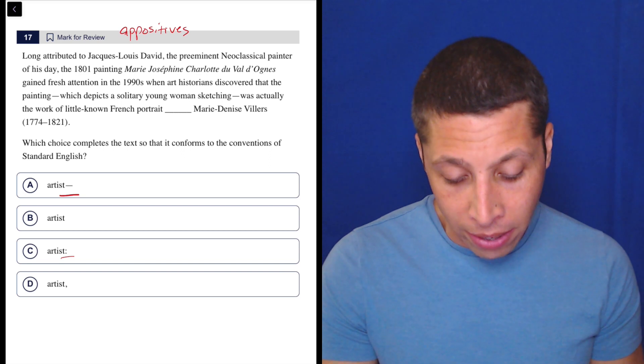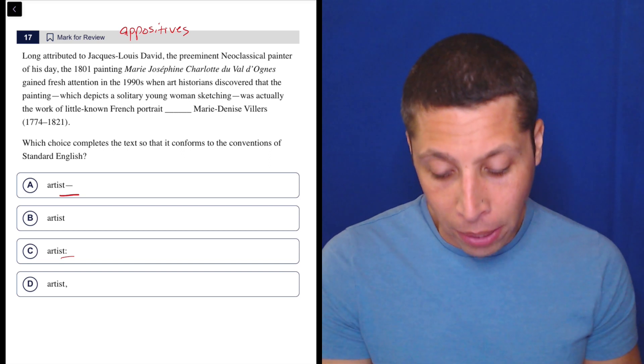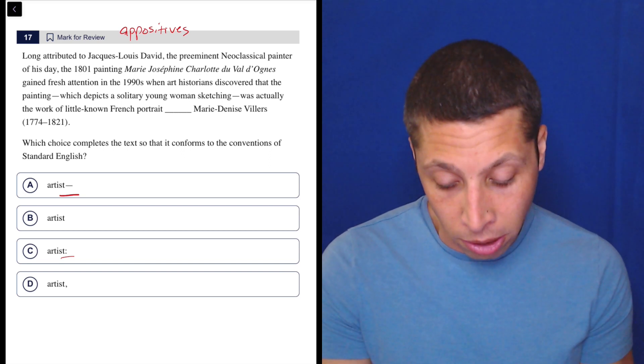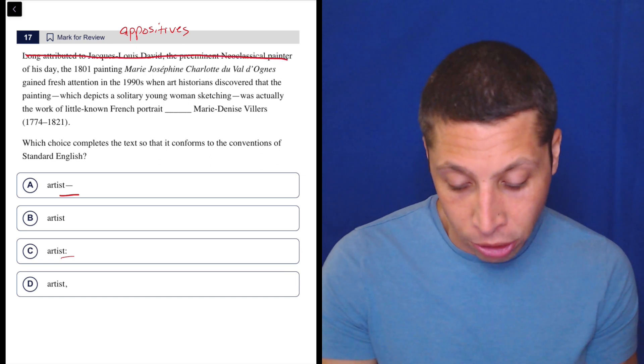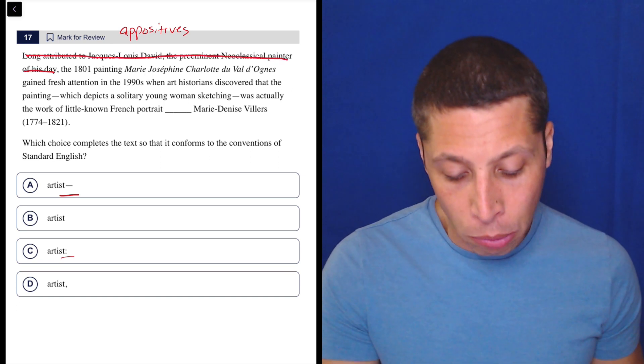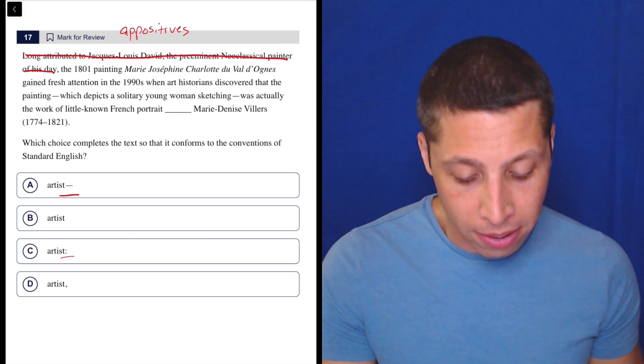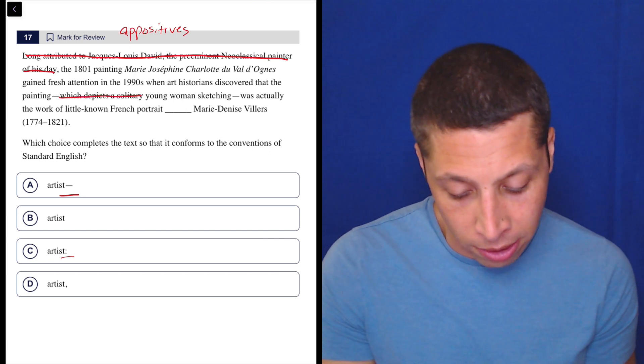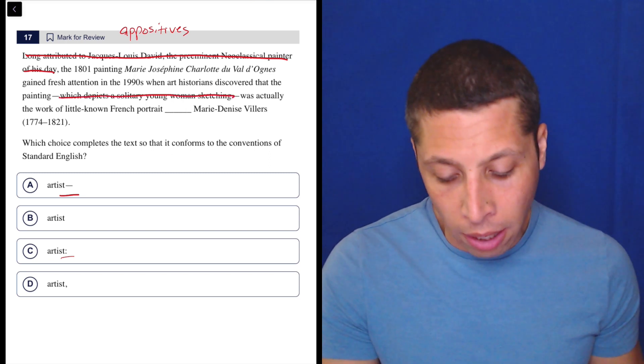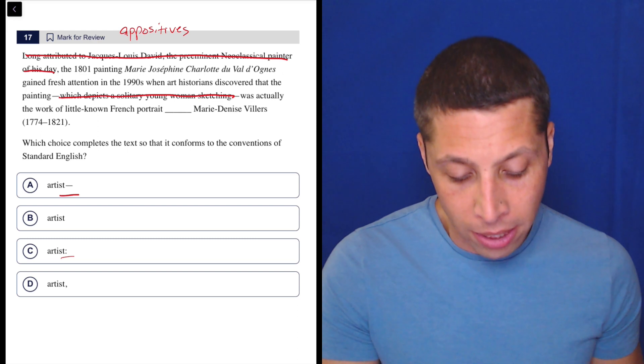Long attributed to Jacques-Louis David, the preeminent neoclassical painter of his day, so that's just a long intro clause, let's ditch it. The 1801 painting Marie-Josephine Charlotte do whatever gained fresh attention in the 1990s when art historians discovered that the painting, which depicts a solitary young woman sketching, so extra, let's ditch it, was actually the work of little-known French portrait artist Marie-Denise Villers.